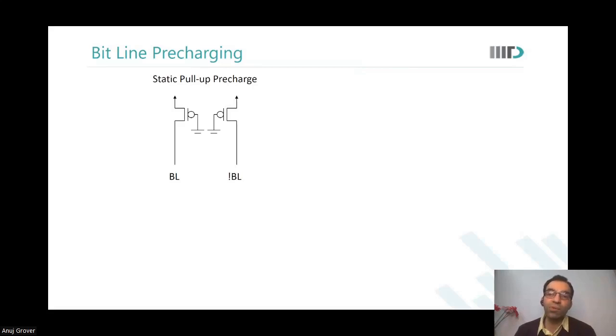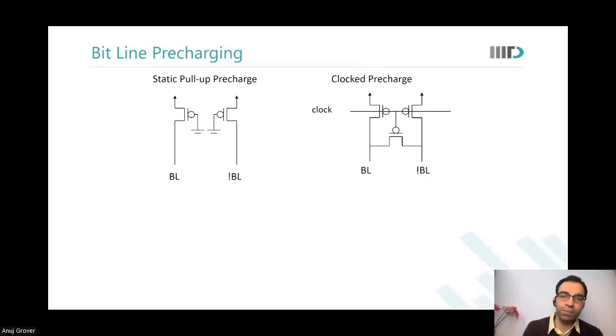You will not really be able to discharge the bit line to a low level and you may not be able to read your memory at all in some cases. So the alternative is clocked precharge. When the read operation or write operation has to happen, only then the precharge would turn off. So now there is no race condition or ratio logic happening between the PMOSes of the precharge and the bit cell which is trying to sink current.